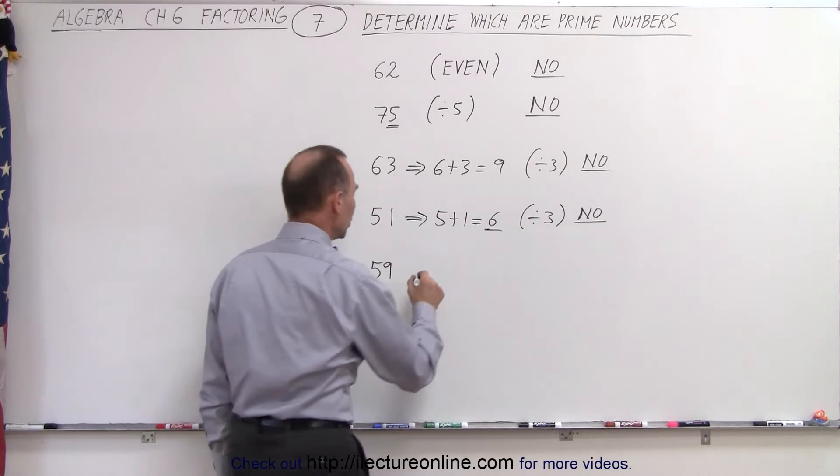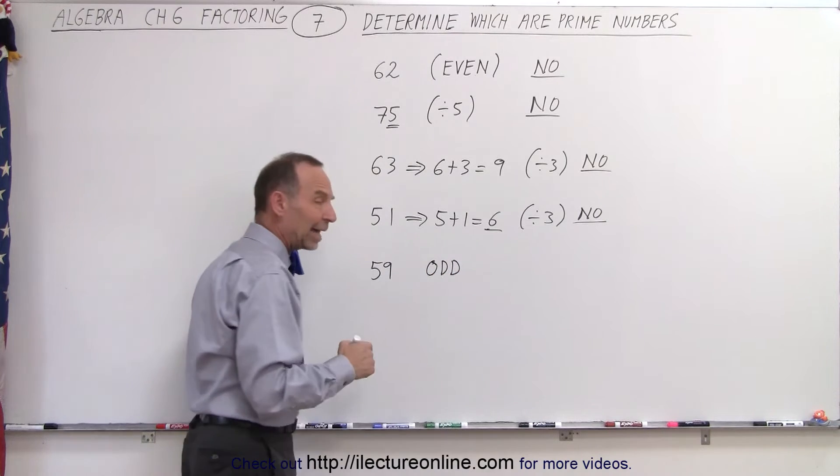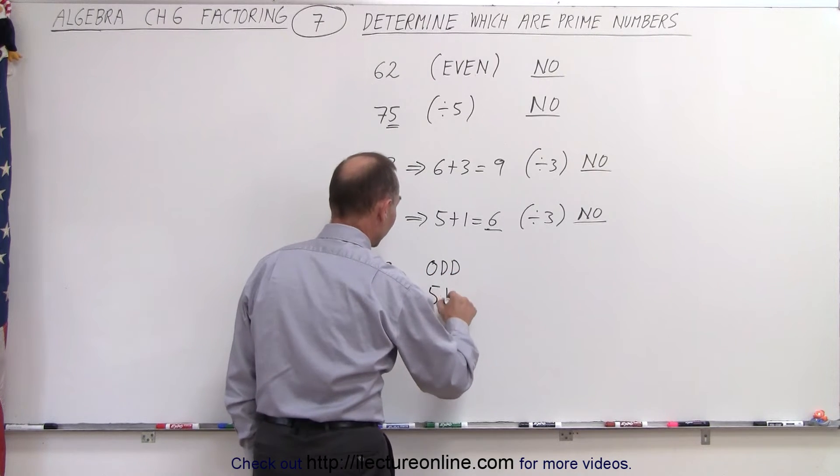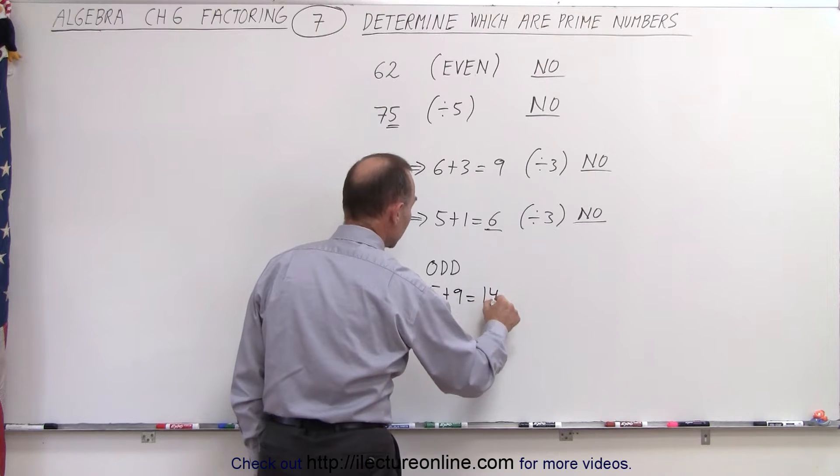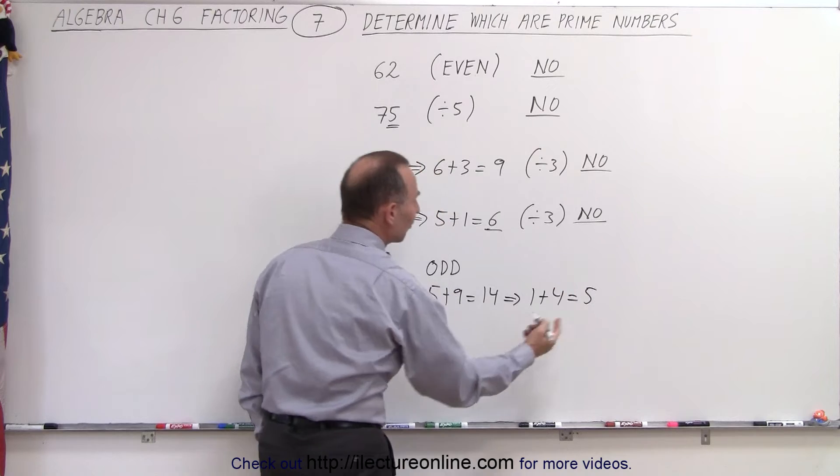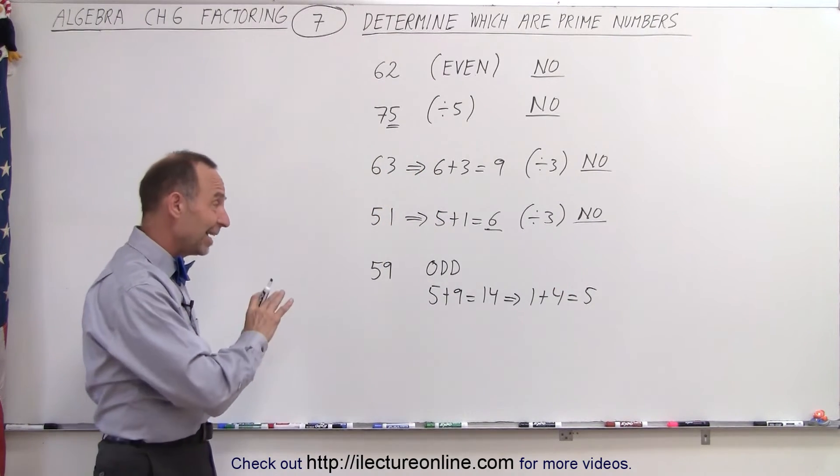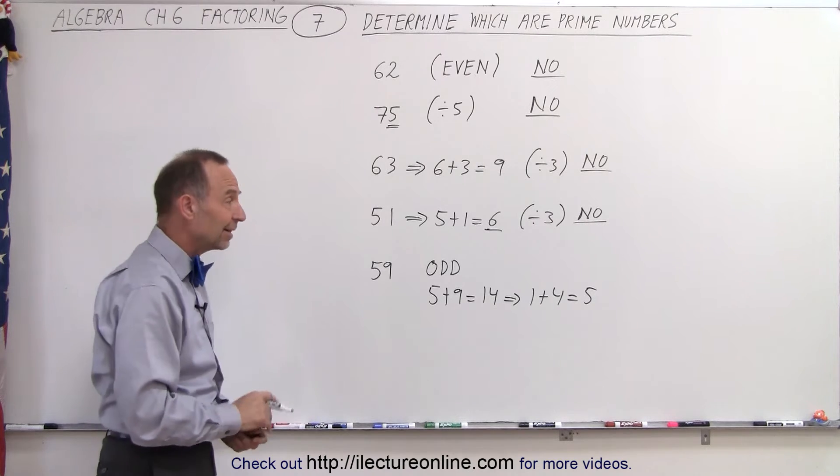So first of all, we know that it's odd, so that makes it a candidate. How about if we add the two digits together, see what we get? 5 plus 9, which is 14, we can then take 1 plus 4, which is 5, and since 5 is not divisible by 5, I mean 5 is not divisible by 3, well that still makes it a candidate.